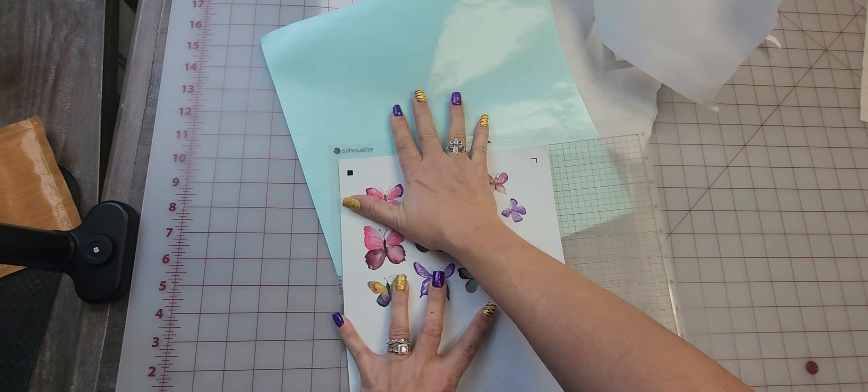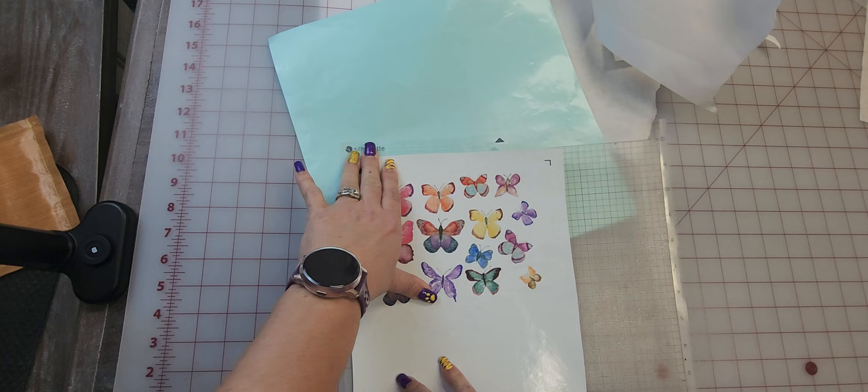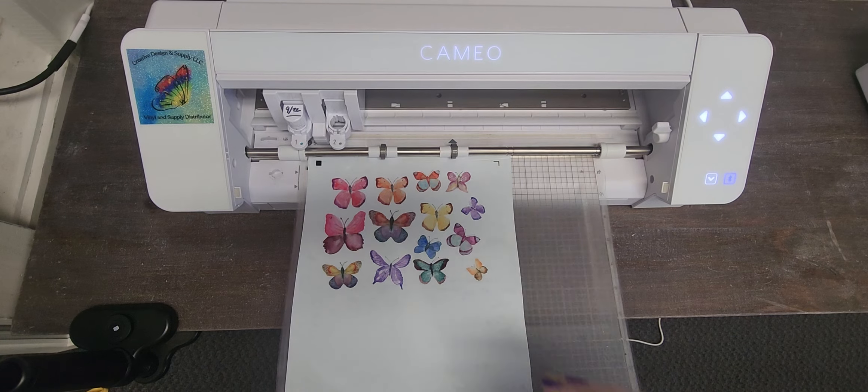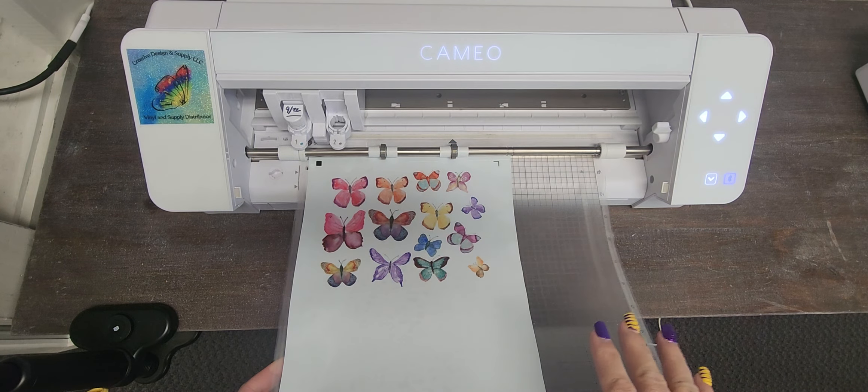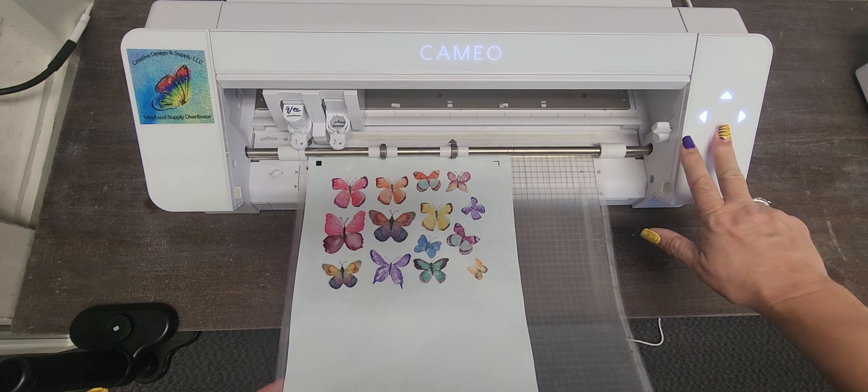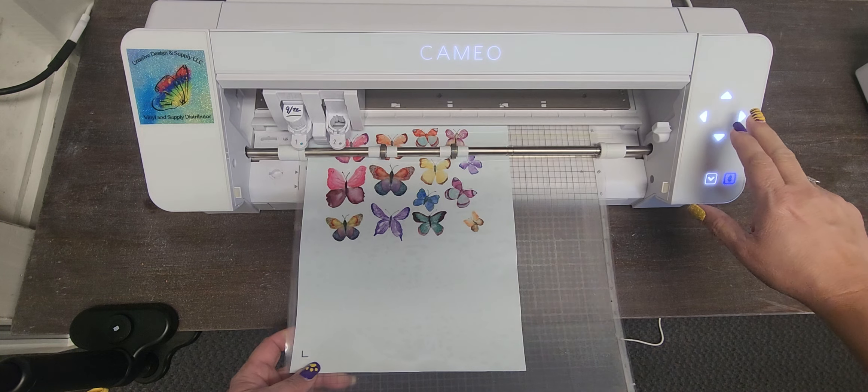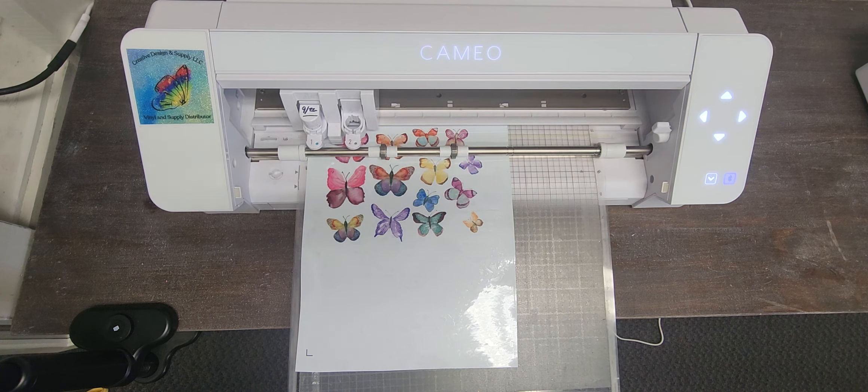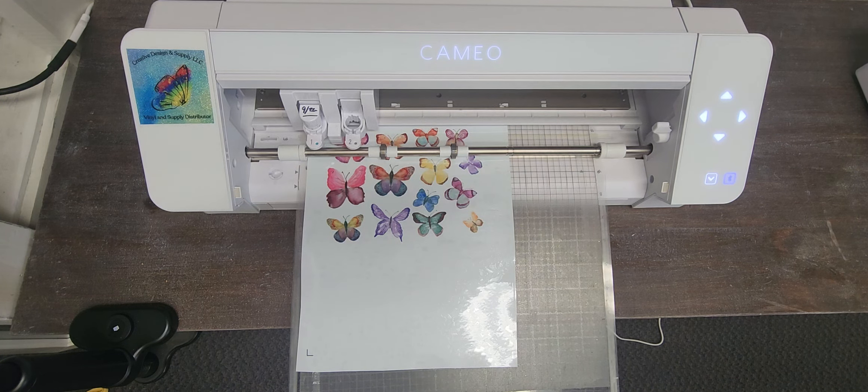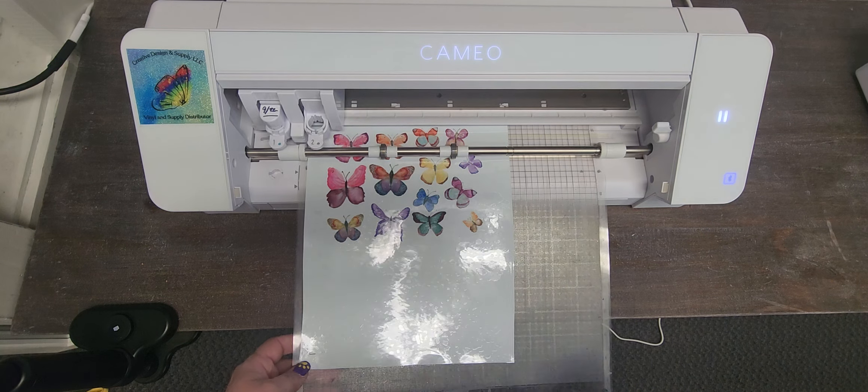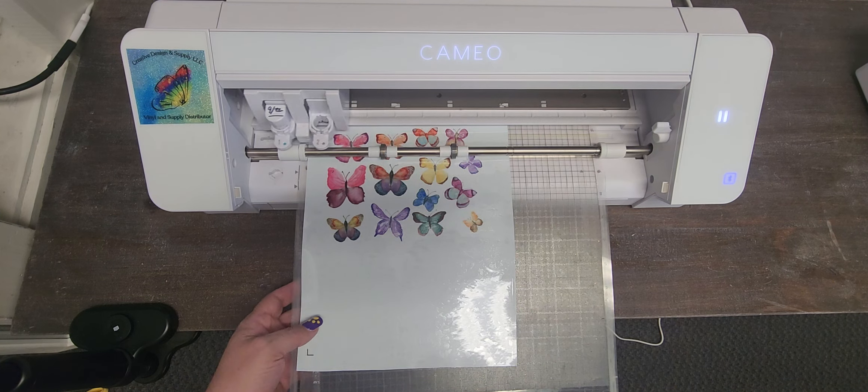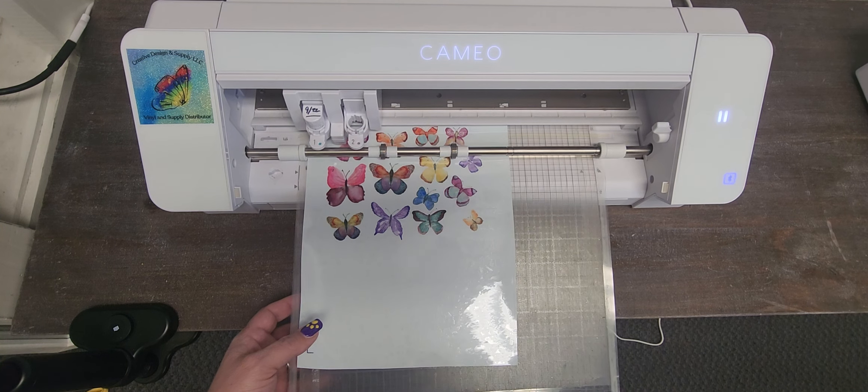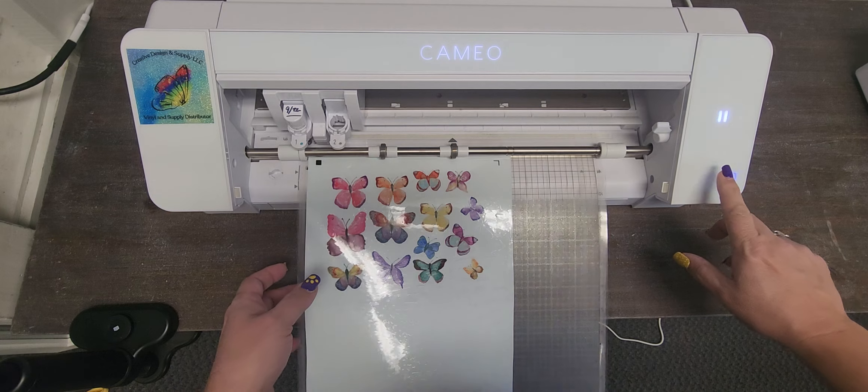All right, so I'm going to go ahead and put this on. It is crooked, I want to show you that, but it will find the registration marks. Let me move you over. So I did a setting, but I'm going to go ahead and - in a lot of my videos I'll show you that you can test on a print and cut. I like to go and I'm going to press test.